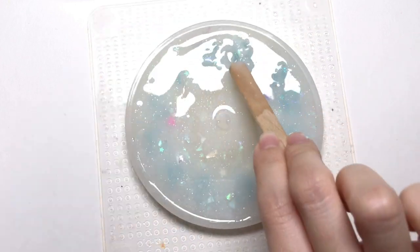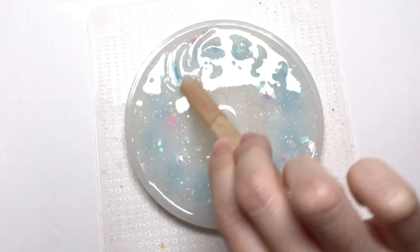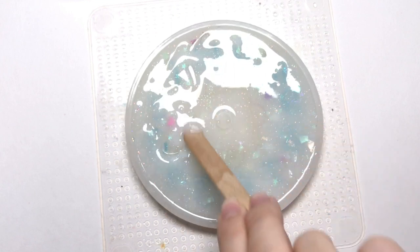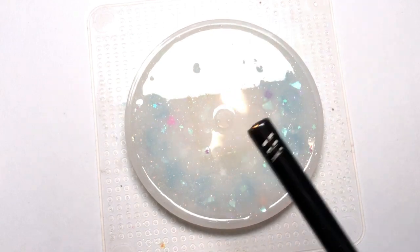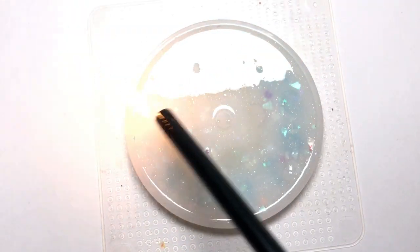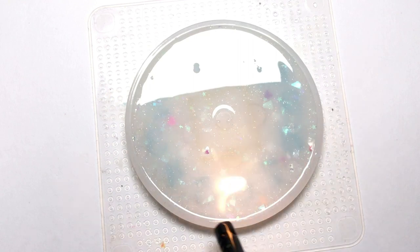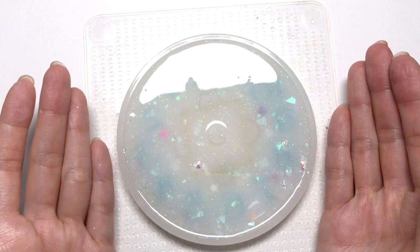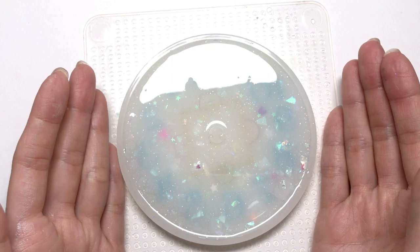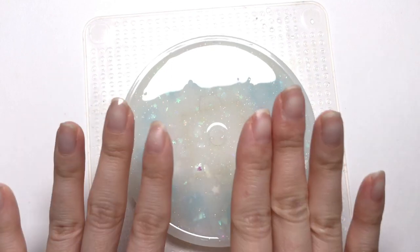I'm going to just kind of swirl it around so that the glitters get evenly distributed inside. And we're going to torture our clock, burn it for answers. What time is it? Alright, I'm going to leave this as it is and let it cure for about four to five hours. And then we're going to pour our final layer.